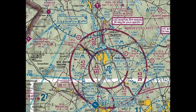To answer the question of whether or not you can fly underneath the shelves of Class B and Class C airspace, I'm going to show this example. This is Manchester Airport, Manchester, New Hampshire. It has a five-mile center core. It's a Class C airspace airport, and then it has a five to ten mile radius shelf that extends outwards.